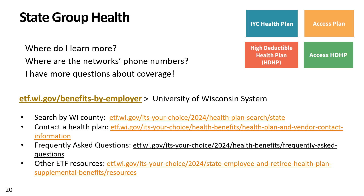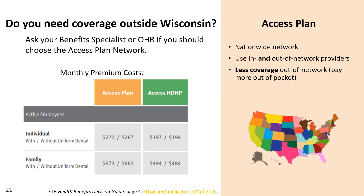To learn more about state group health, find network phone numbers, or get answers about coverage, visit the listed websites where you can check if your provider is in the network you plan to choose. When you select a network, you stay in it for the rest of the year. You can only change your network during a life event or annual benefit enrollment, with changes effective at the start of the next year. If you need coverage outside Wisconsin, the access plans give you nationwide coverage and more flexibility, but with a higher monthly premium. Ask your benefits specialist if you're unsure whether to choose the access plan.